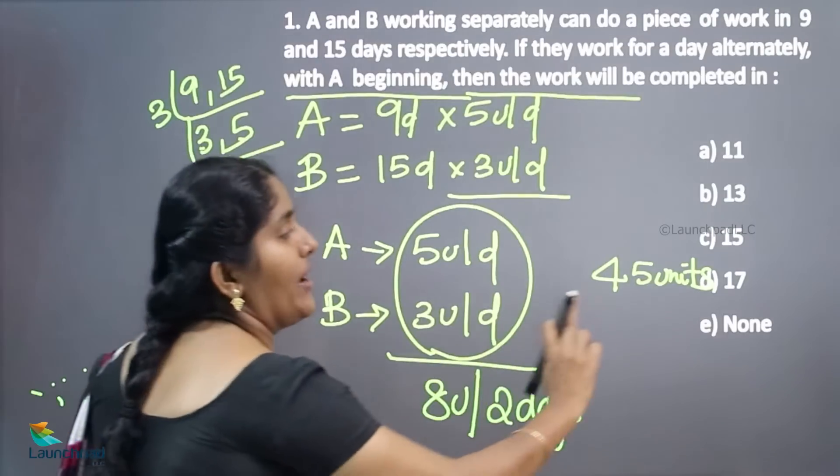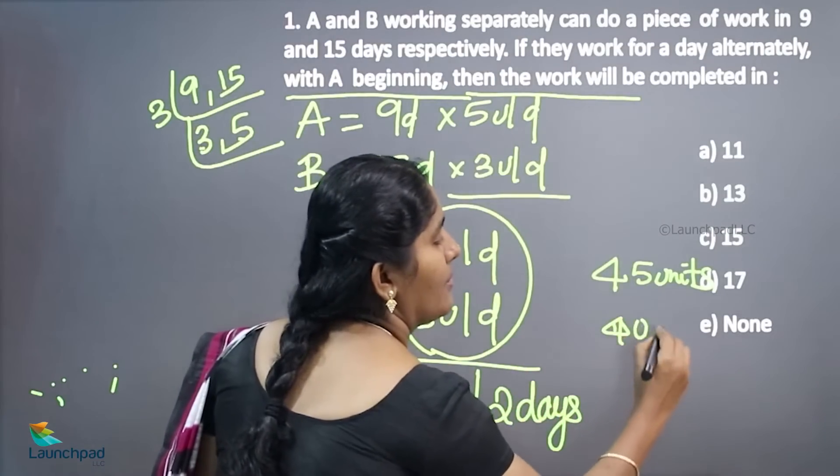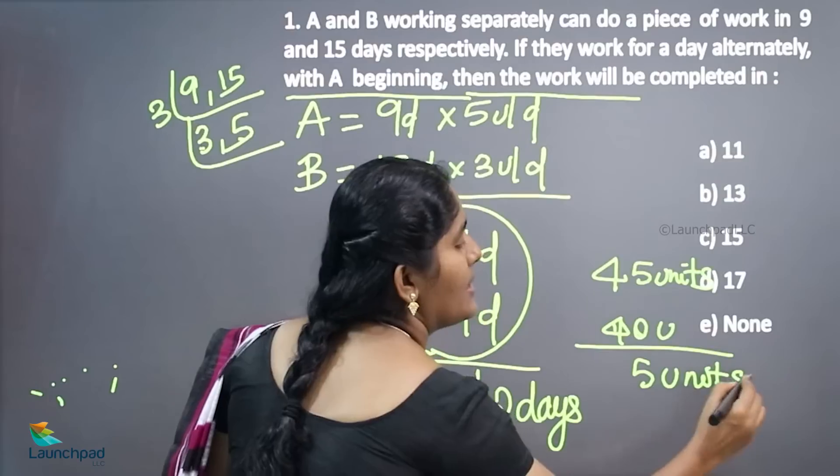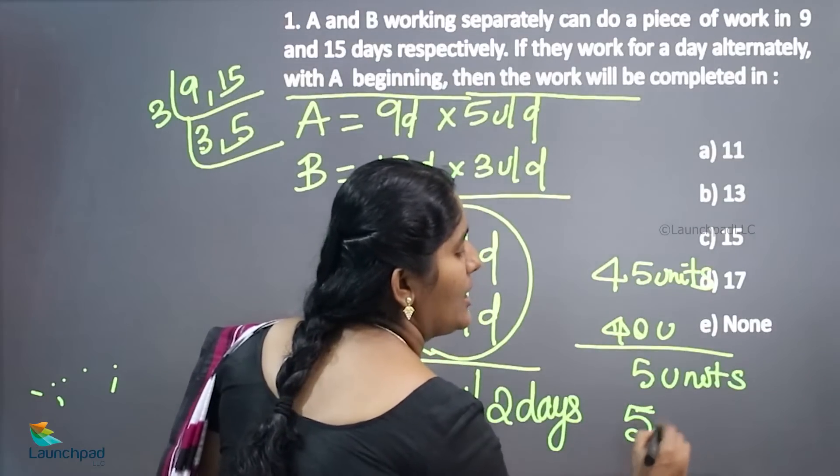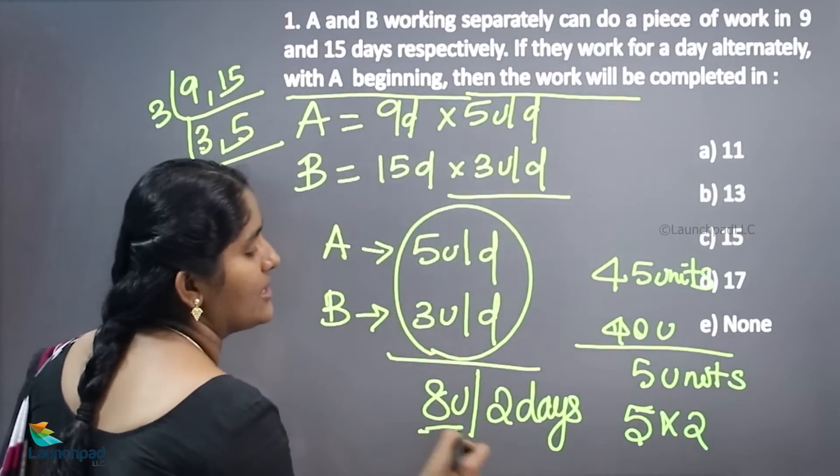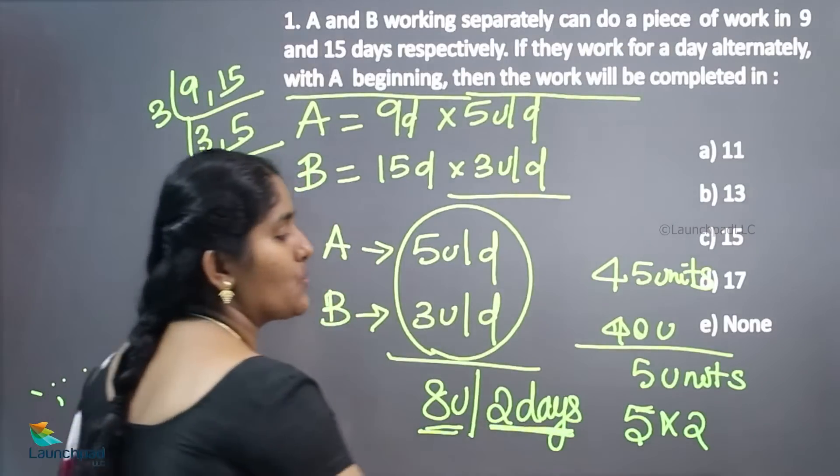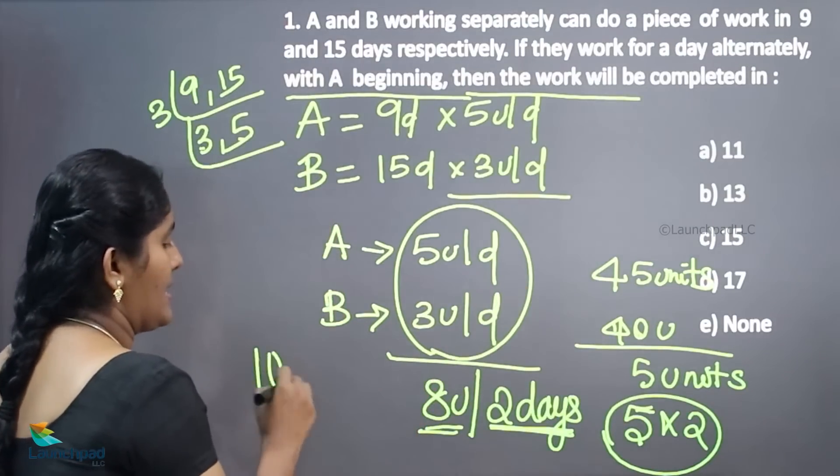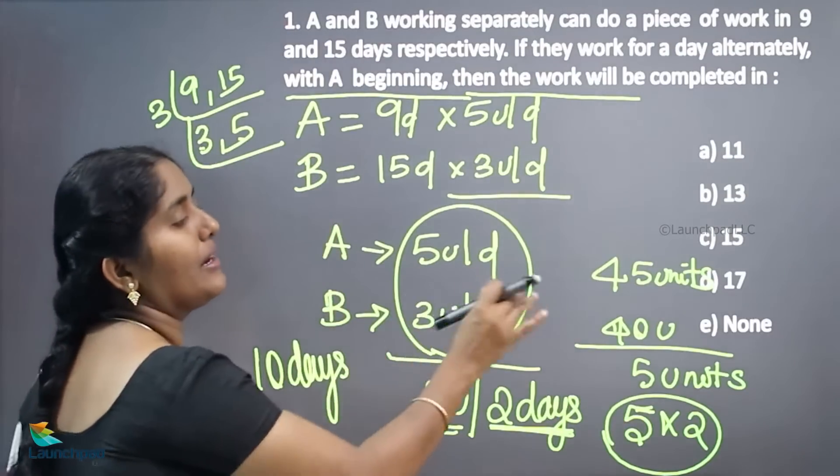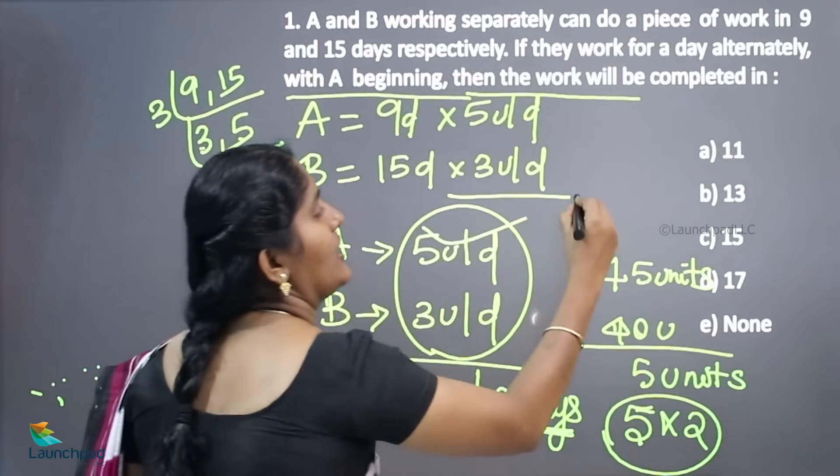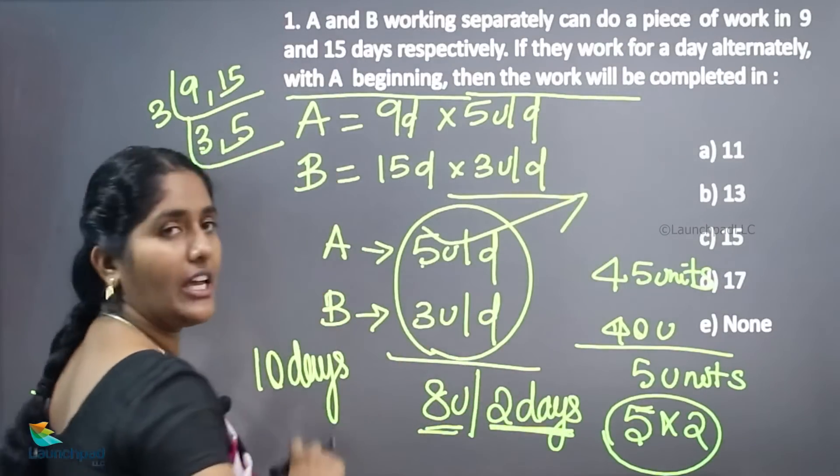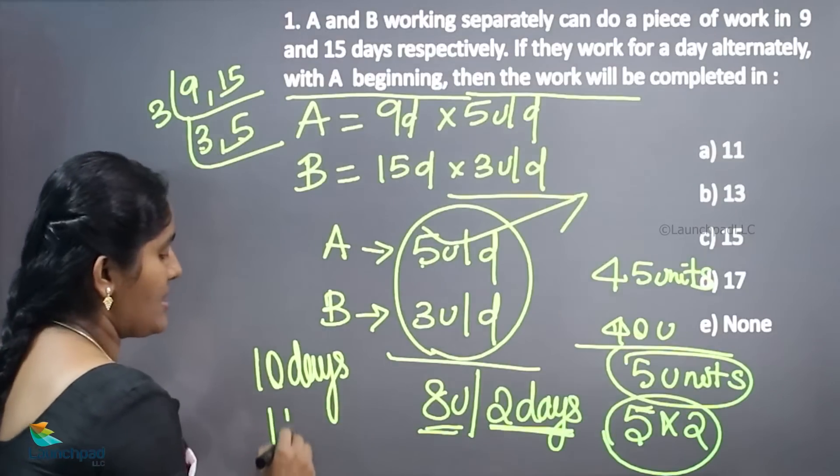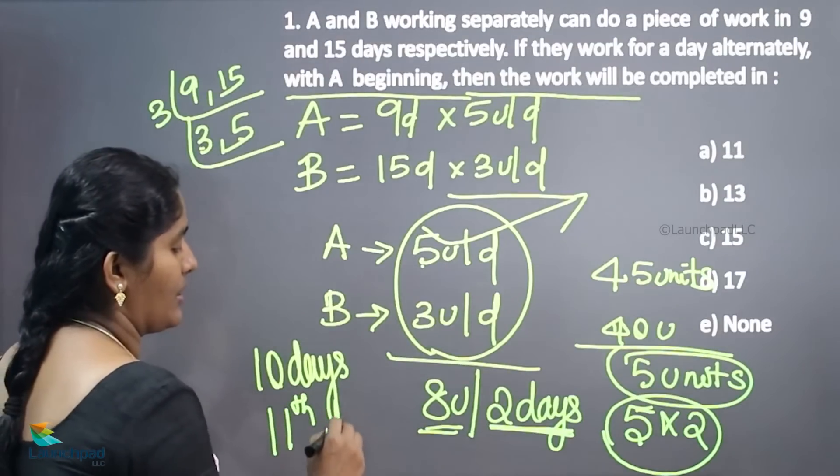Now 5 eights are 40. The remaining 5 units are there. 5 into 2, because this 8 is 2 days work unit, that's why I am multiplying here into 2. For example, 10 days, 40 units are completed. The next day A can do the job. A can complete 5 units. Now the remaining 5 units are there, so the 11th day the whole work will be completed.